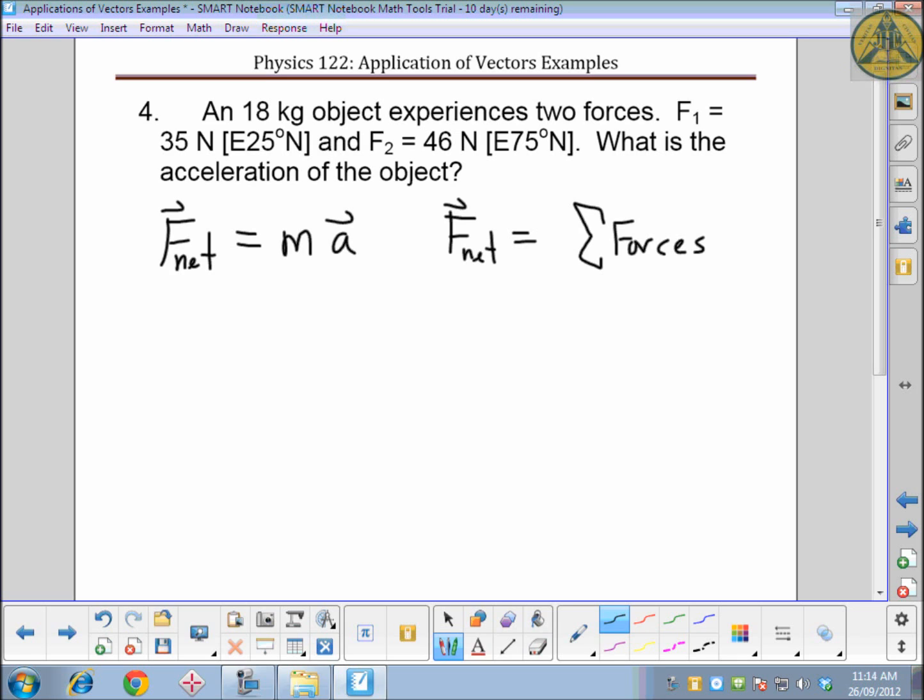First, I will break apart each force into its components. So 35 cosine 25, the trigonometry horizontal adjacent side to that force will be cosine. That's going to give you 31.7. That's an N for newtons, not north. Its northern component, let's do that over here, is 35 sine 25 degrees. So most of the time, horizontal will be cosine and vertical will be sine.